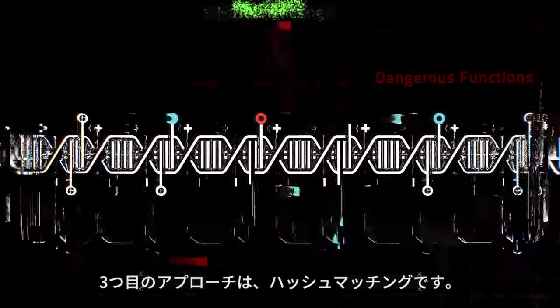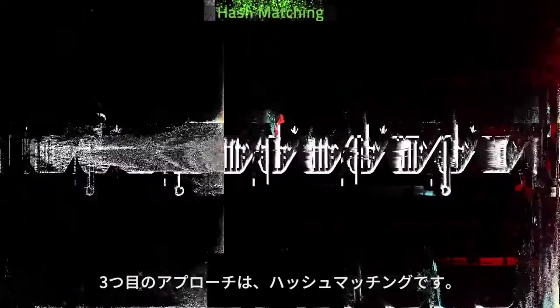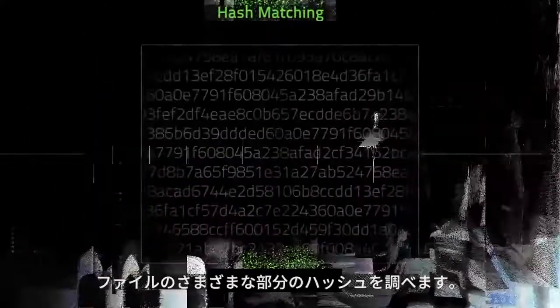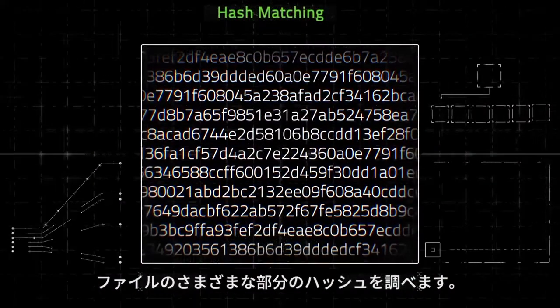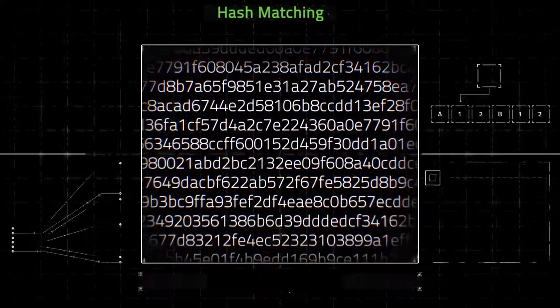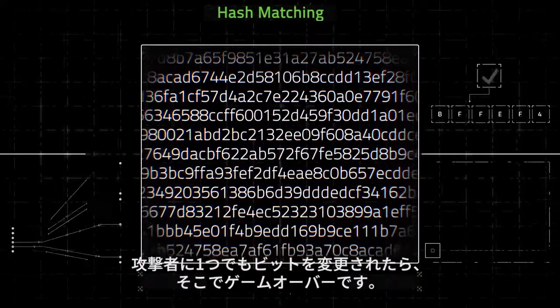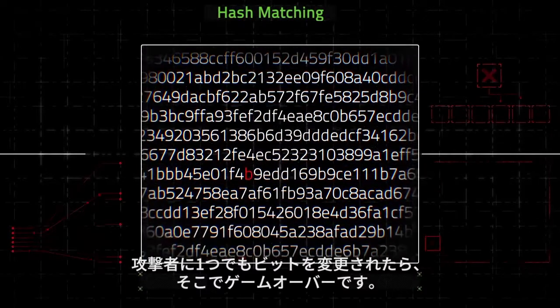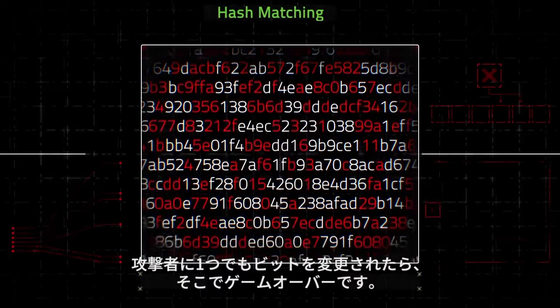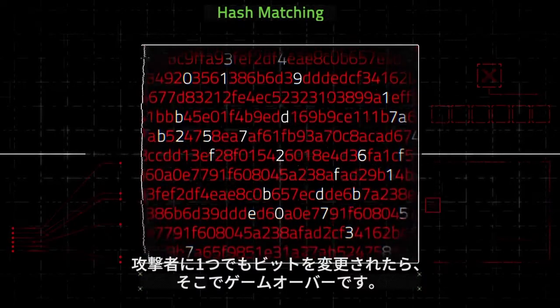The third approach is hash matching. The AV calculates hashes over different parts of the file. An attacker only needs to change one bit, and it's game over for the AV.